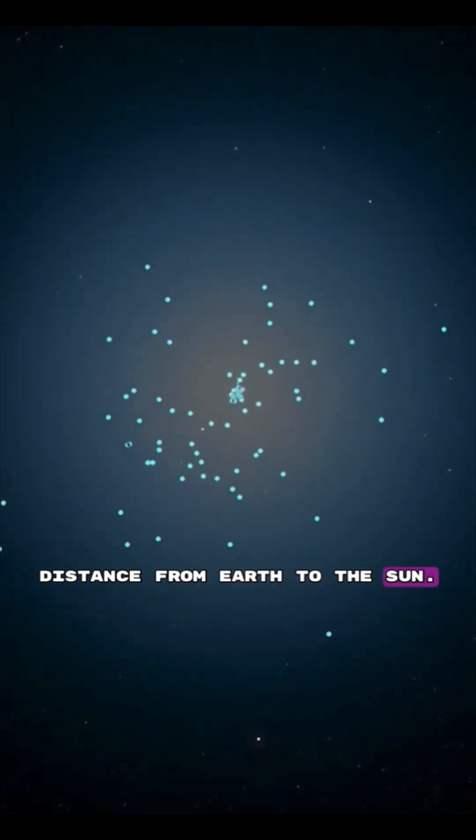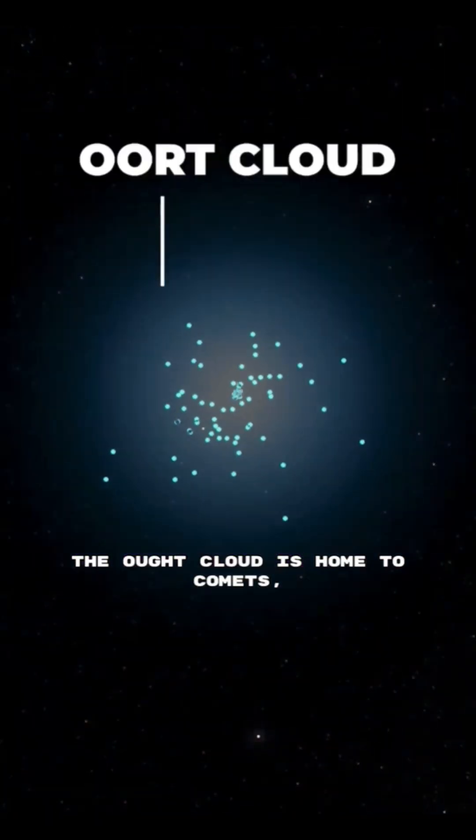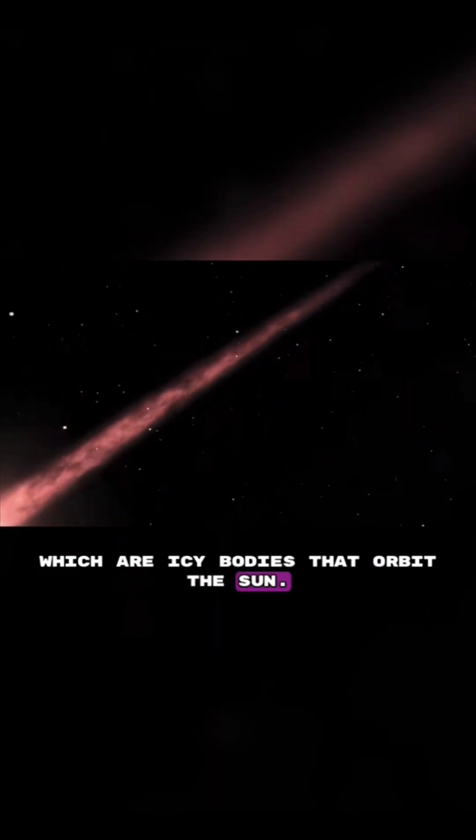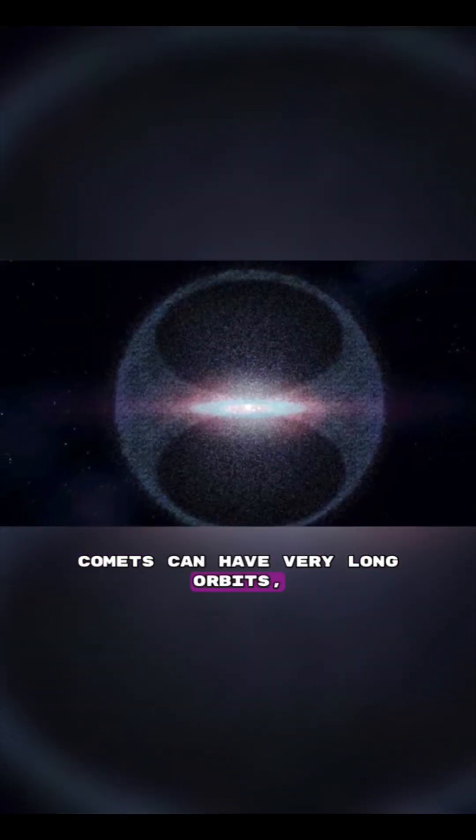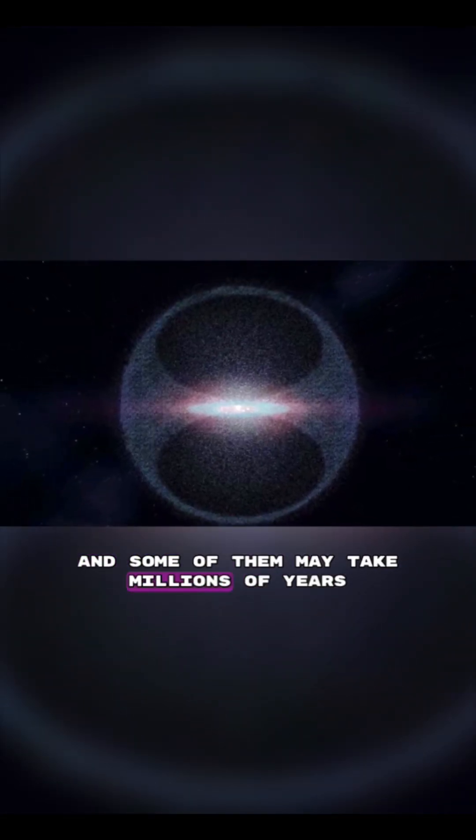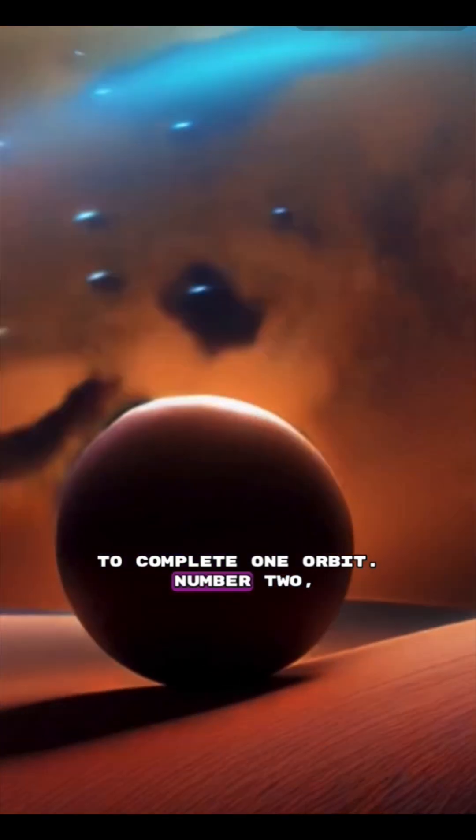The Oort Cloud is home to comets, which are icy bodies that orbit the Sun. Comets can have very long orbits, and some of them may take millions of years to complete one orbit.